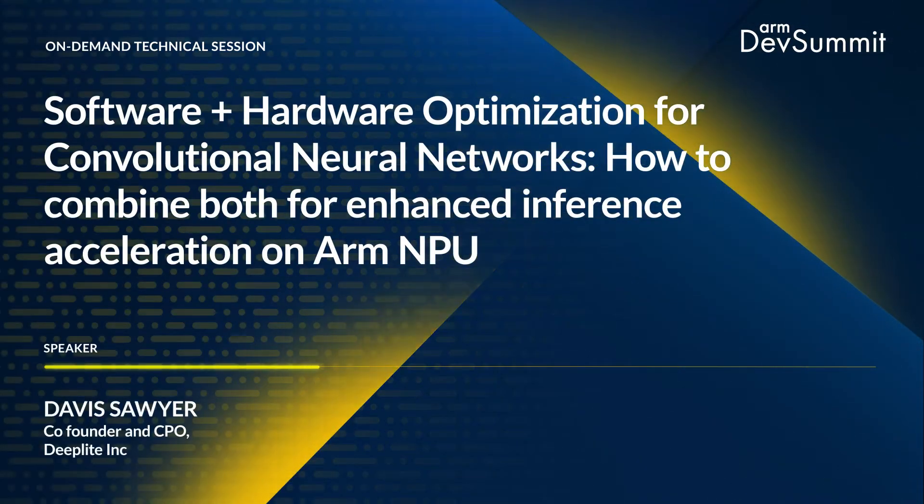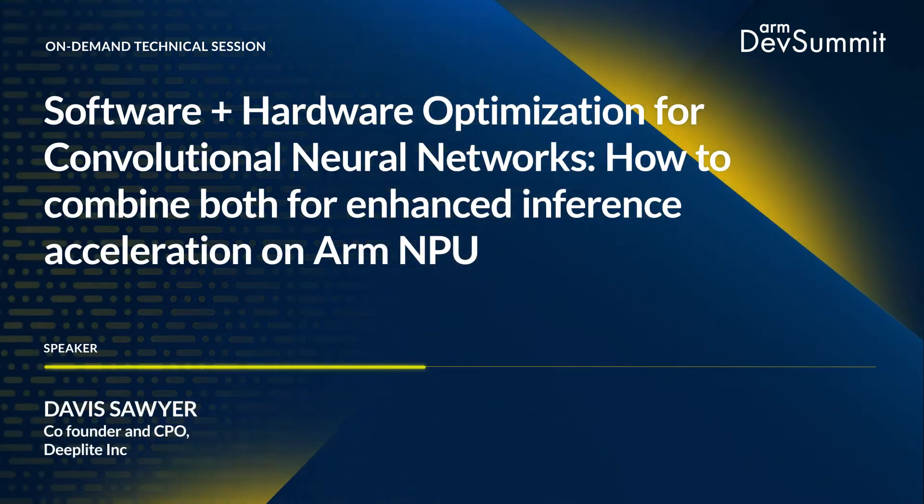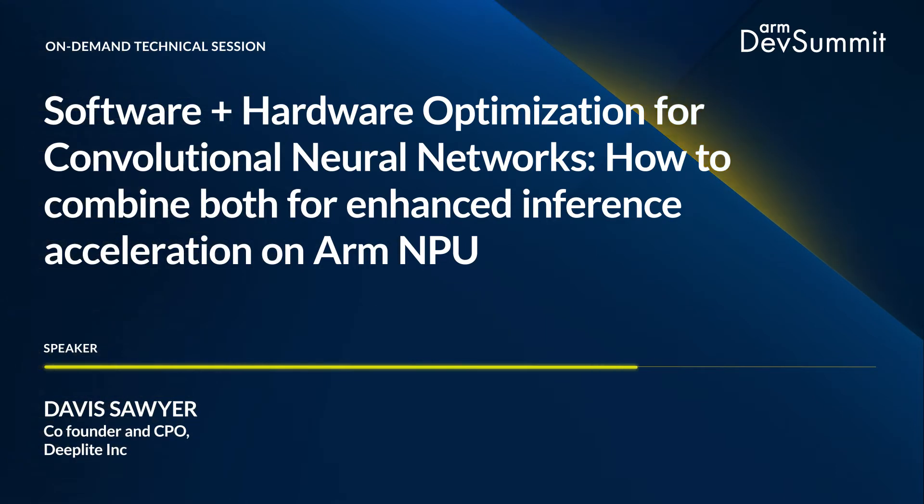Hello everyone and welcome to our session at the Arm Dev Summit. My name is Davis Sawyer, Co-Founder and Chief Product Officer at DeepLight. Today we're very excited to share our talk on how we've combined software optimizations with optimized hardware from Arm to create faster inference for convolutional networks on NPUs, and how these two worlds join forces to enable developers to create faster, more efficient models on new hardware endpoints.